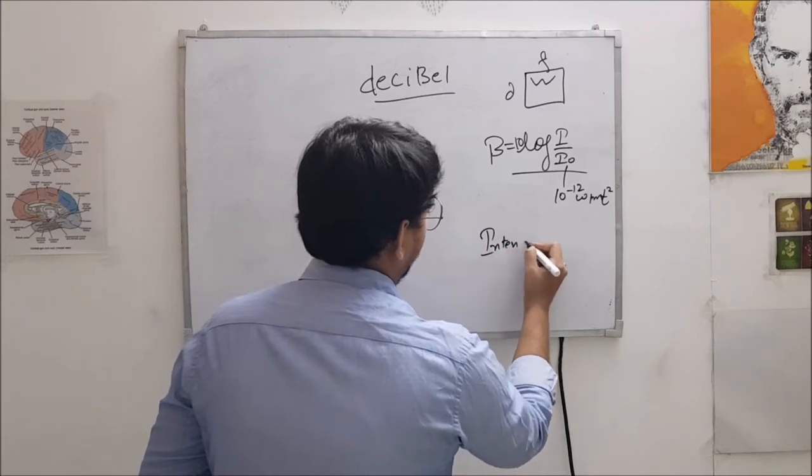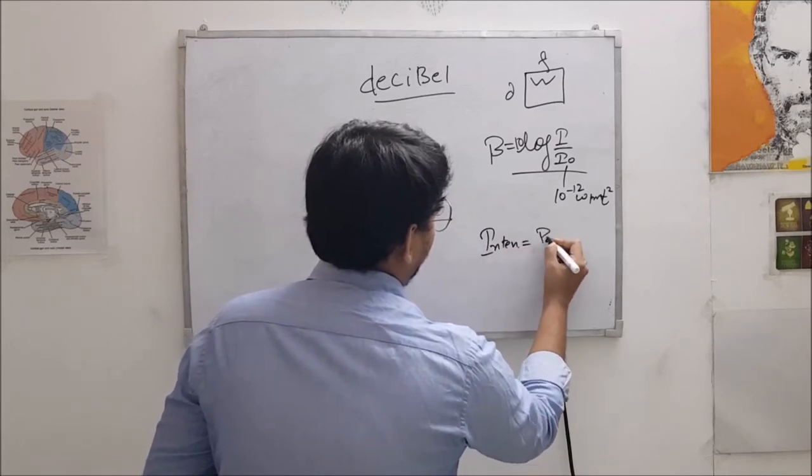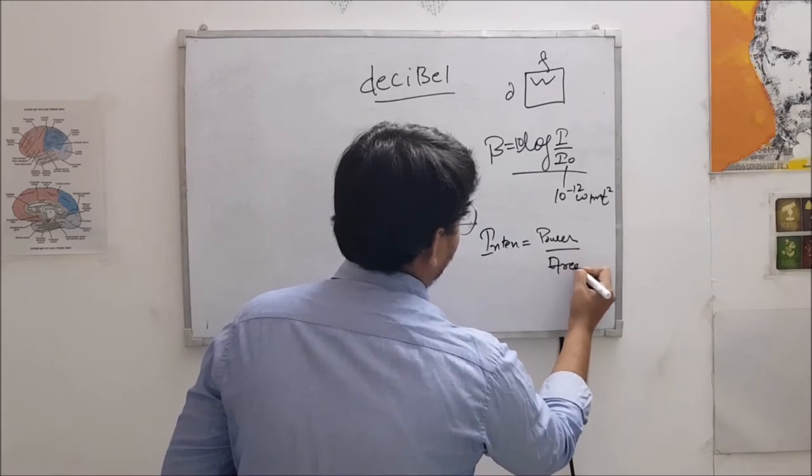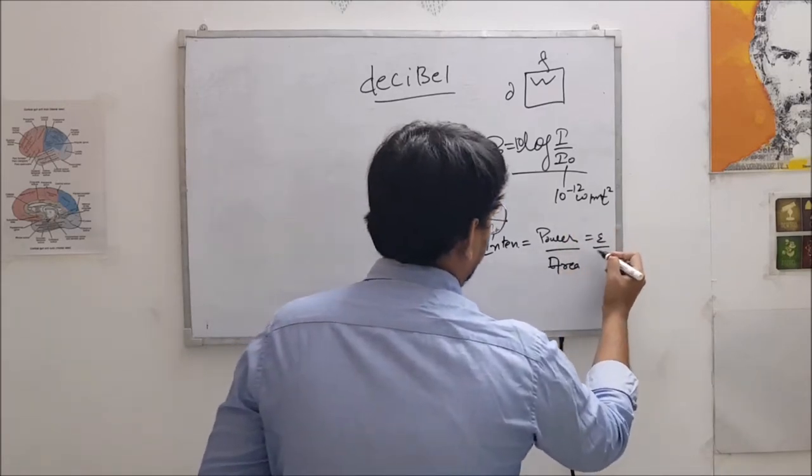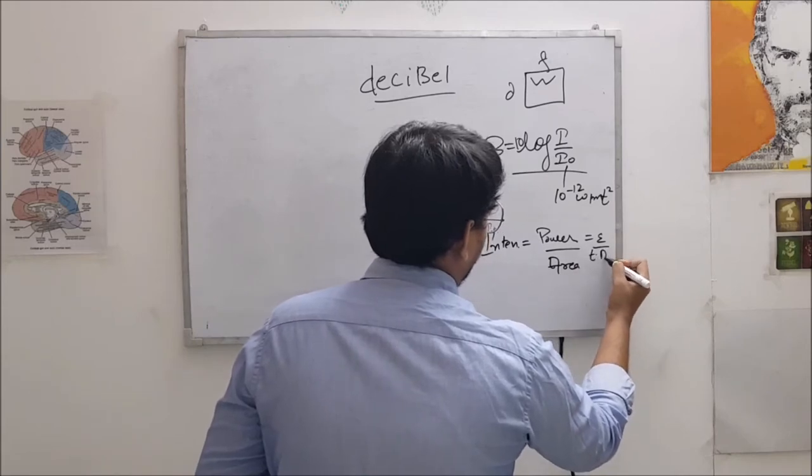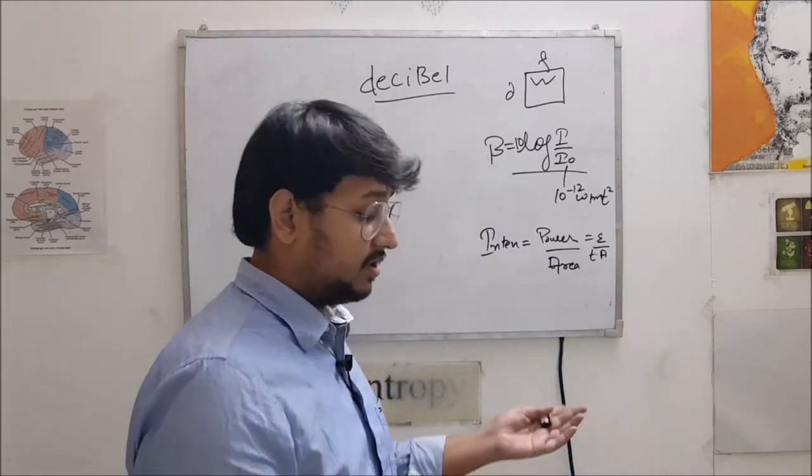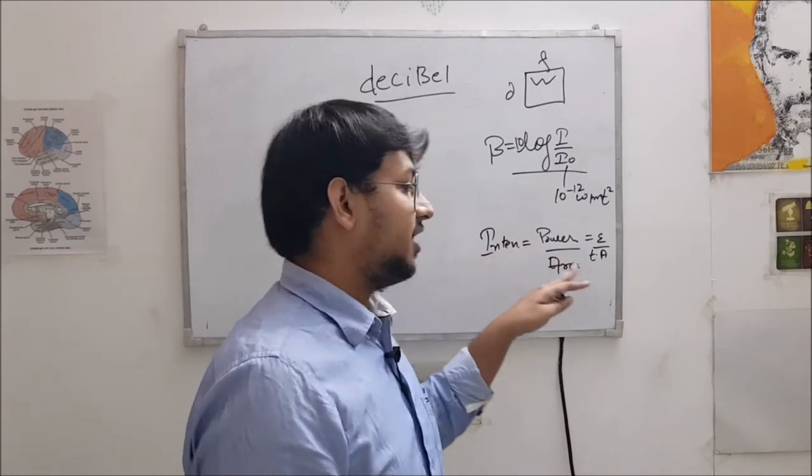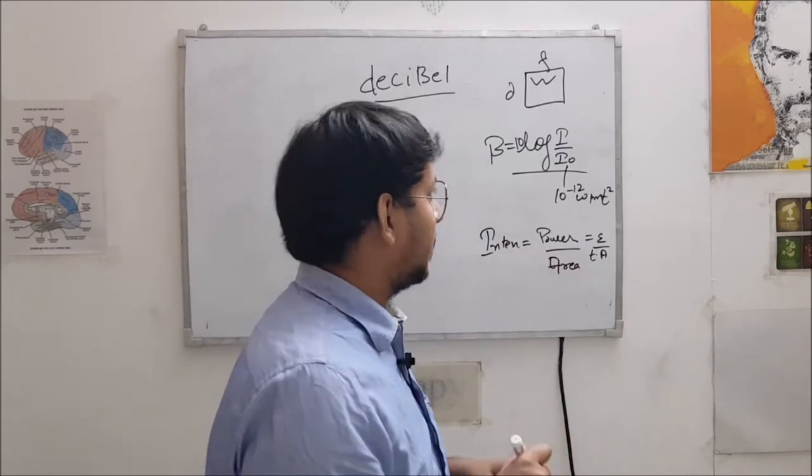Basically friends, intensity is power per unit area and power may also be written as energy per unit time area. So energy per unit time is power and intensity is power per unit area.